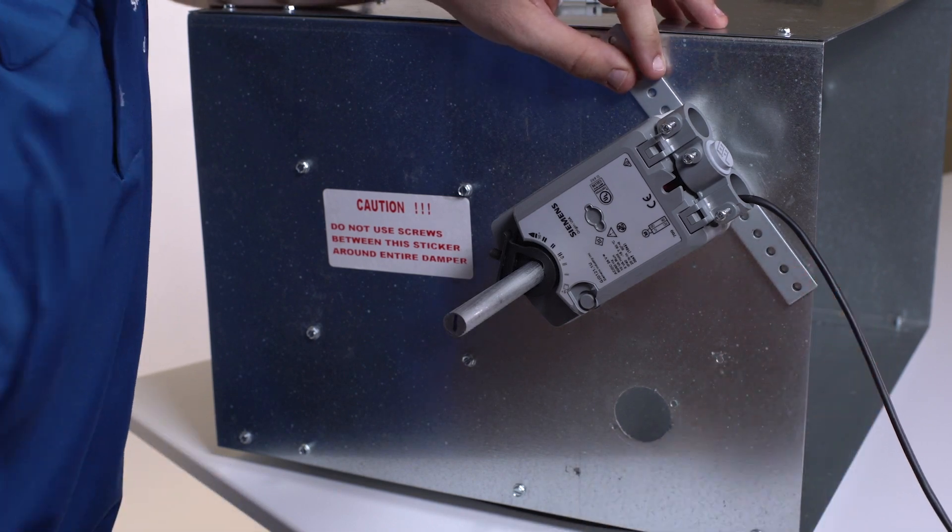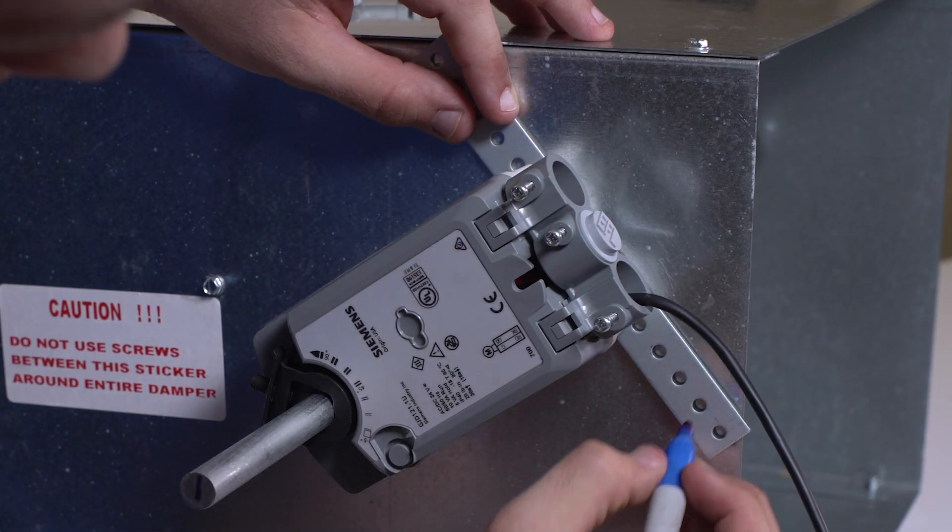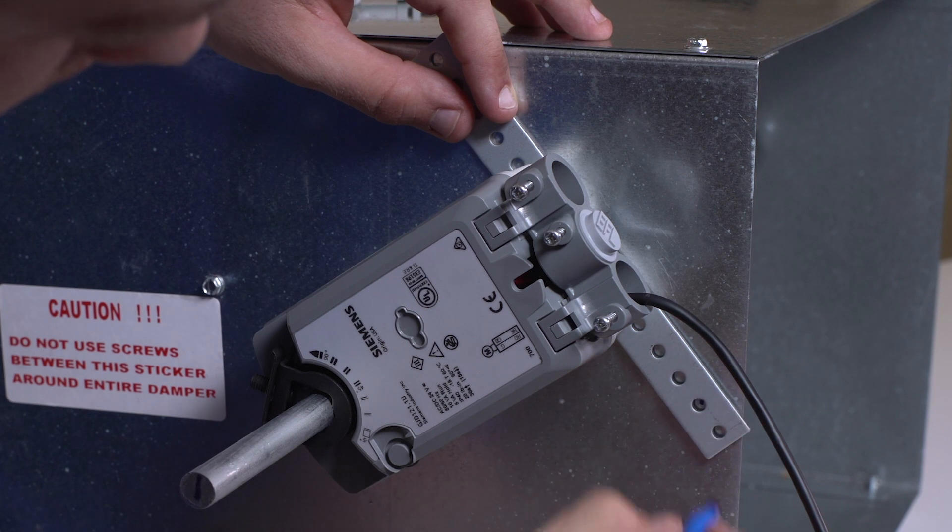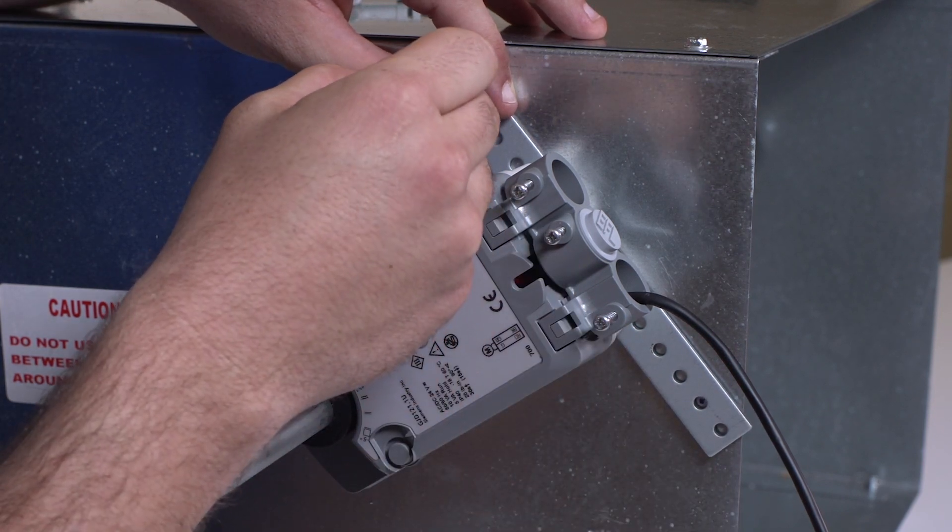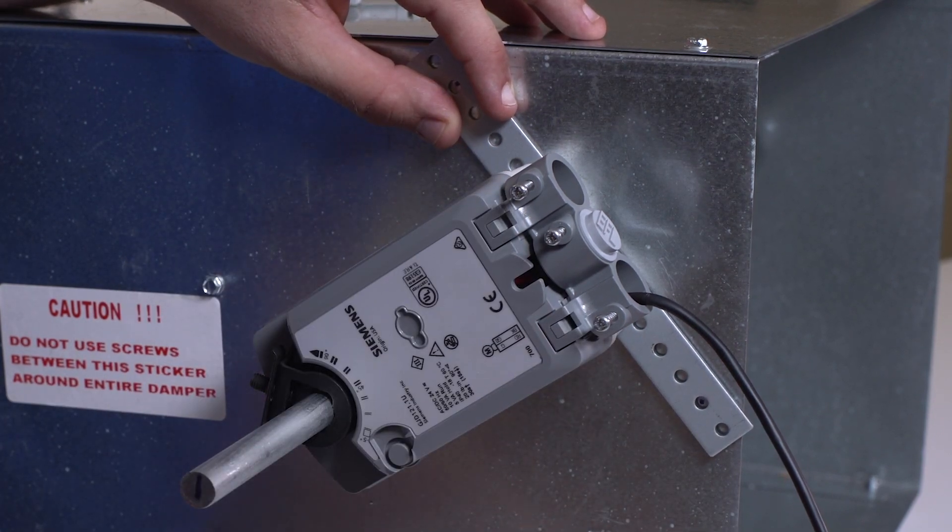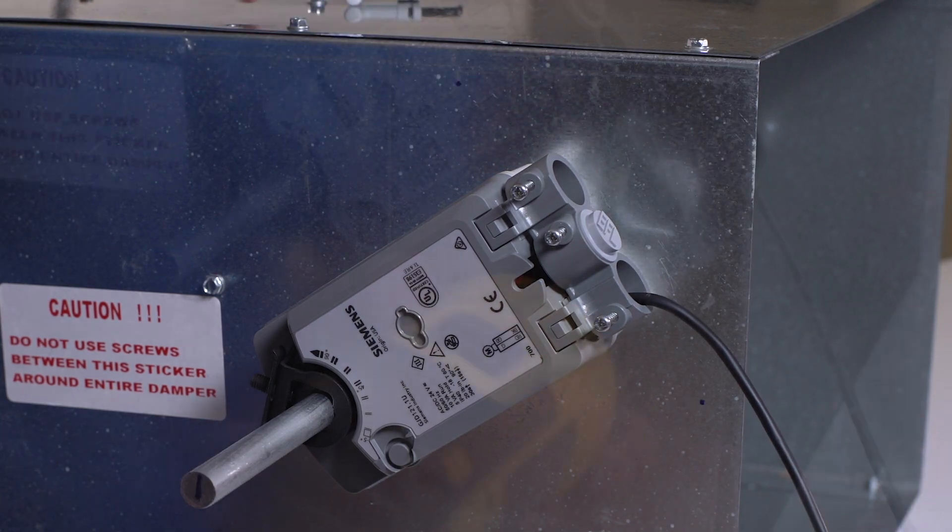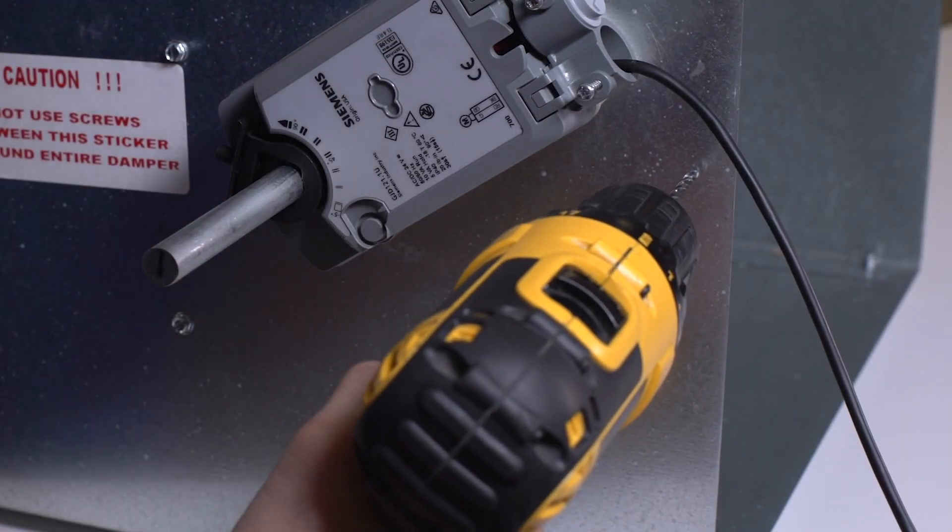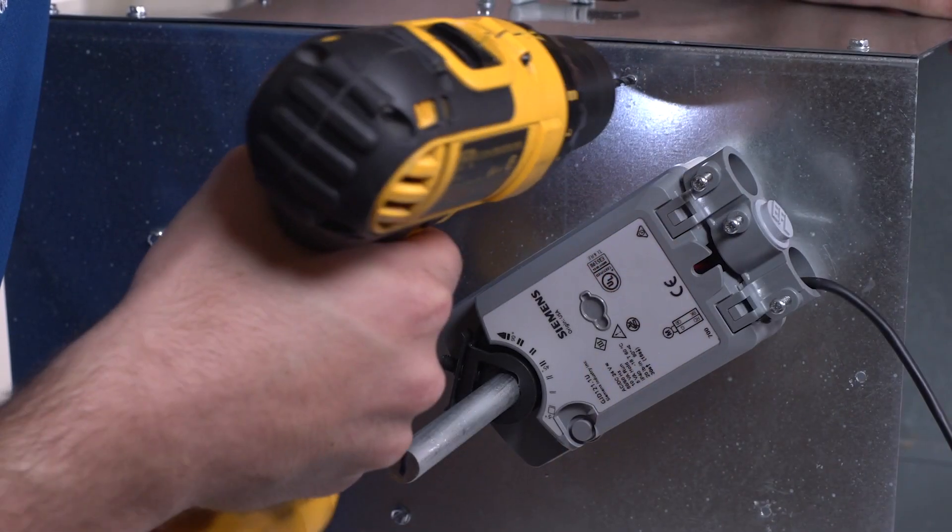Next, insert the anti-rotation bracket and orient to the damper as necessary. Keep the bracket to the center of the slot at the bottom of the actuator. Drill a hole at each end of the bracket and secure with self-tapping screws.